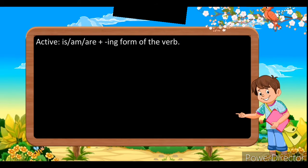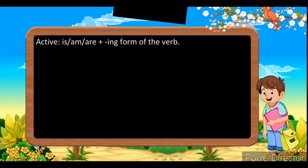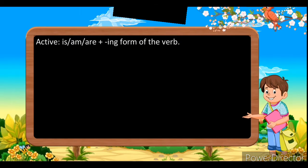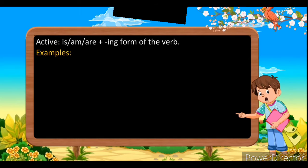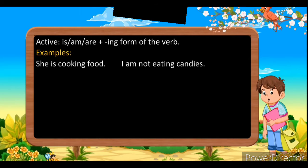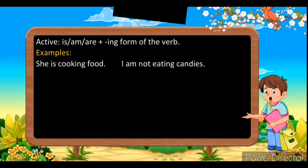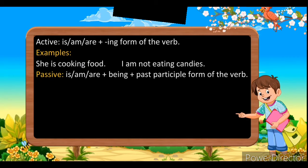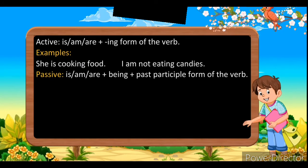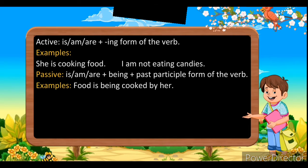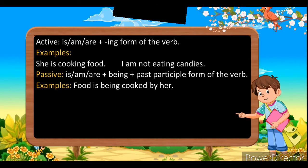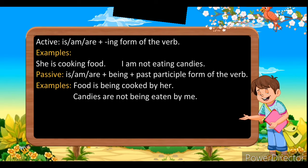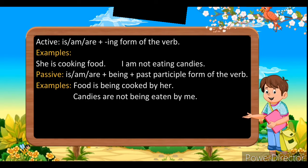Present continuous tense: in active voice, use is/am/are plus the verb's first form with '-ing'. For example: 'She is cooking food'; 'I am not eating candies.' To change it into passive, use is/am/are plus 'being' plus the verb's third form. Examples: 'Food is being cooked by her'; 'Candies are not being eaten by me.'